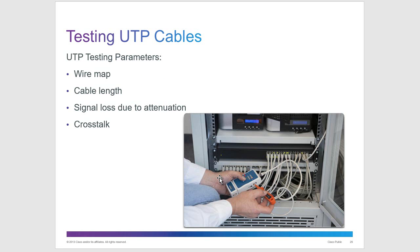UTP testing parameters: you can use wire testers to check cable length, signal loss due to attenuation, crosstalk, and the method of wiring. A cable tester confirms wiring is correct. There is also a recommended cable length limit, which we'll discuss shortly.